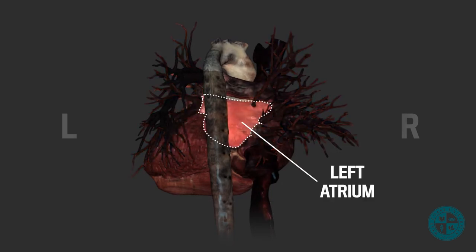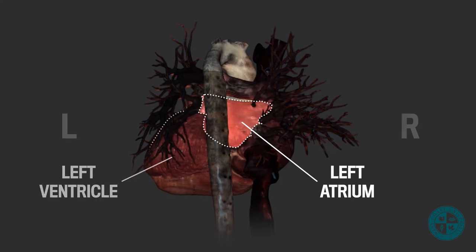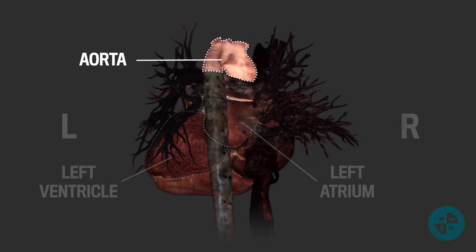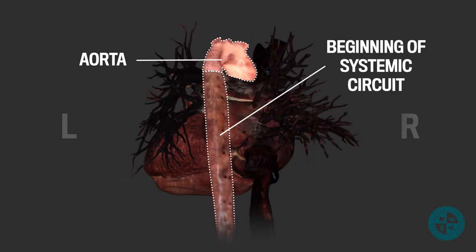The left atrium will collect and drain blood into the left ventricle, which will then pump the blood out into the aorta, which is the beginning of our systemic circuit, where this blood will provide oxygen to all the tissues of the body.